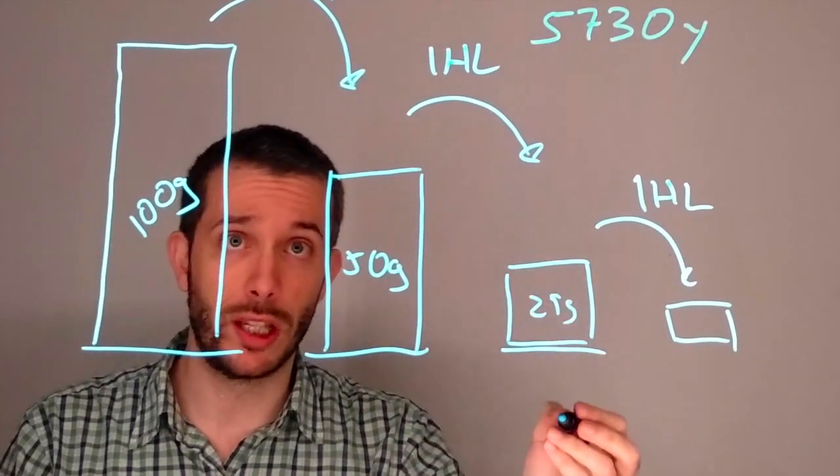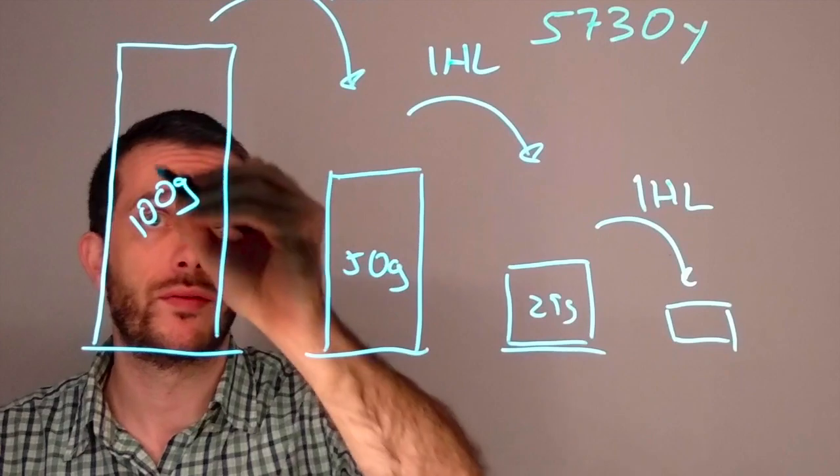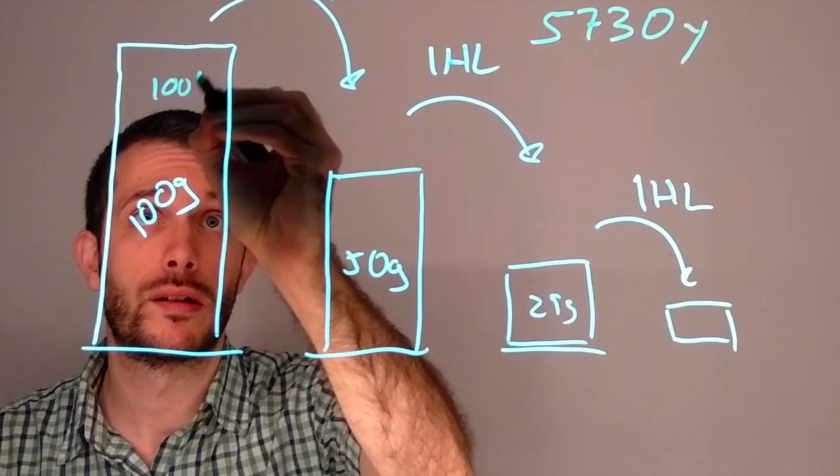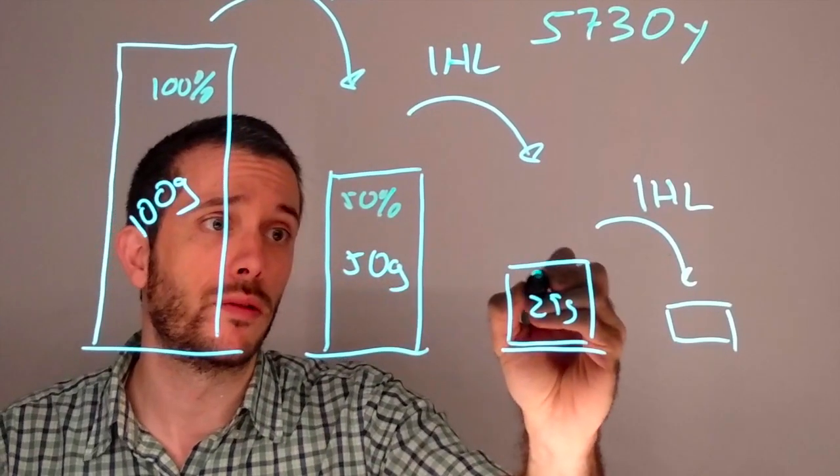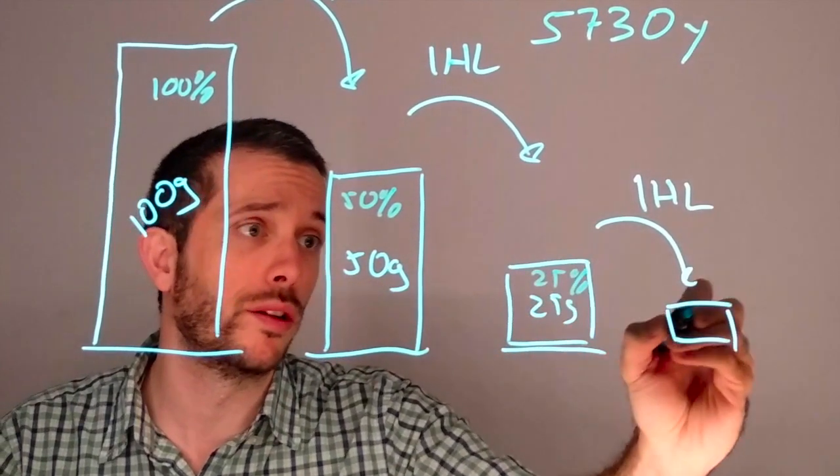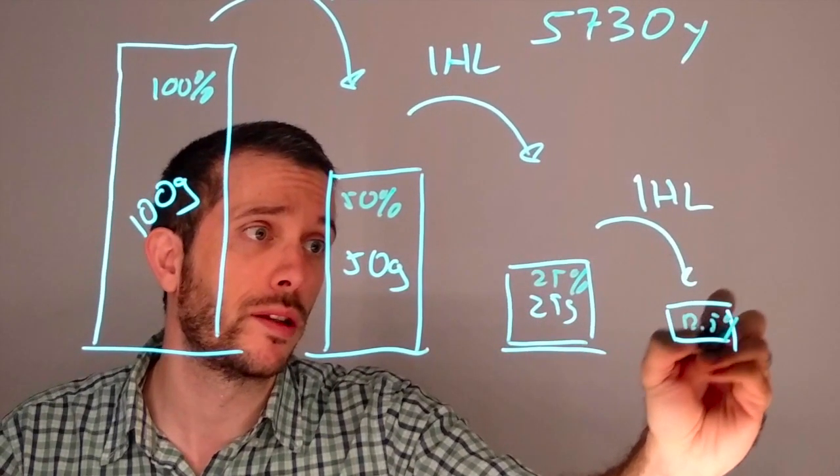and to 25, and so on. So, here, this would be 100%, we could say 50%, and 25%, and so on, 12.5%.